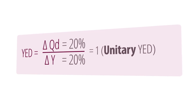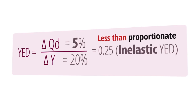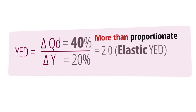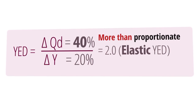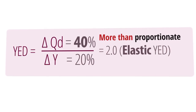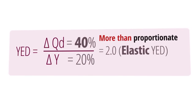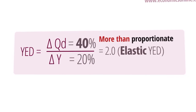When the coefficient is less than 1, the YED is inelastic, and when it is greater than 1, it is elastic. So, in the case of both clothing and bread, YED is elastic, which means there is a greater proportionate response in demand to the change in income. Both goods are elastic, despite having different signs.